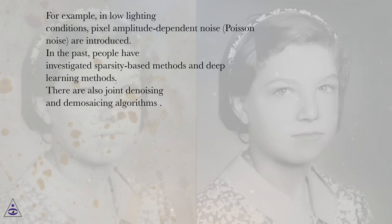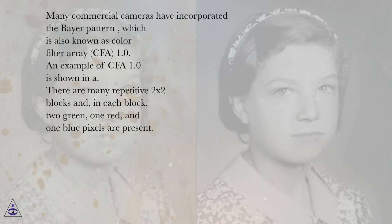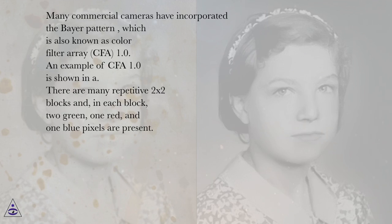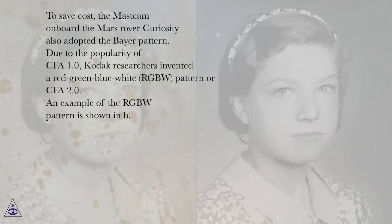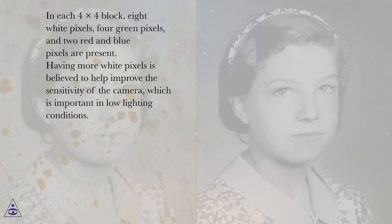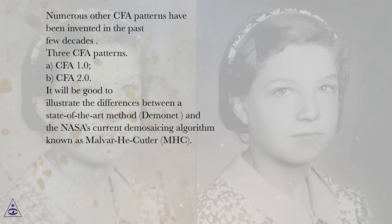Many commercial cameras have incorporated the Bayer pattern, also known as Color Filter Array CFA-1.0. In each repetitive 2×2 block, 2 green, 1 red, and 1 blue pixel are present. The MassCam on the Mars rover Curiosity also adopted the Bayer pattern. Due to the popularity of CFA-1.0, Kodak researchers invented the red-green-blue-white (RGBW) pattern, or CFA-2.0. In each 4×4 block, 8 white, 4 green, and 2 red and blue pixels are present. Having more white pixels improves camera sensitivity in low lighting conditions. Numerous other CFA patterns have been invented in the past few decades.